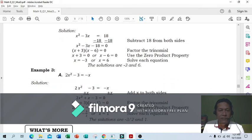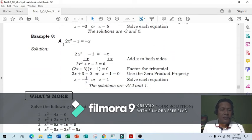Sample number 3: 2x squared minus 3 equals negative x. Move all terms to the left side to make the right side 0. Add x to both sides. So 2x squared plus x minus 3 equals 0 on the right side.